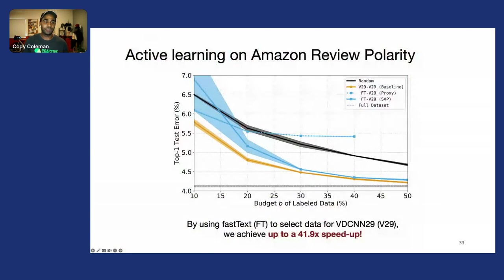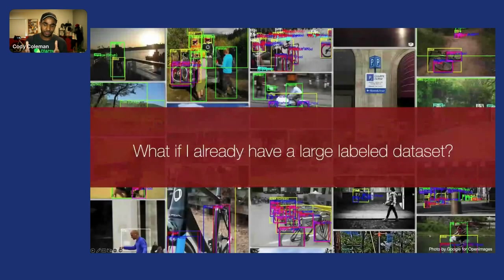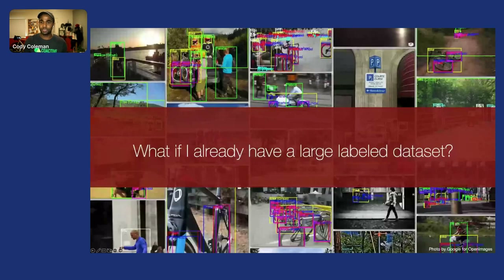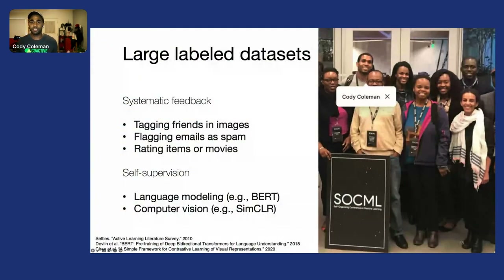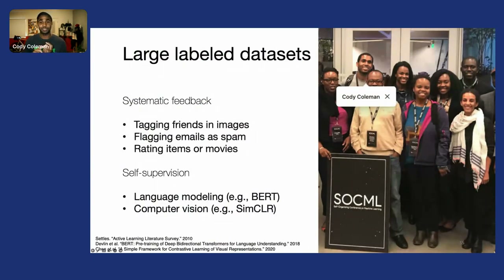We're not just limited to figuring out which data points to label in active learning—we can also use Selection by Proxy to distill down large labeled datasets. This comes up in practice when you have systematic feedback from users, such as tagging images on social media.